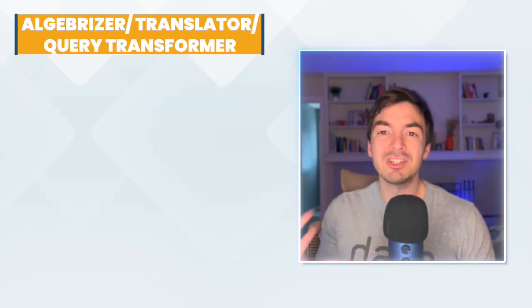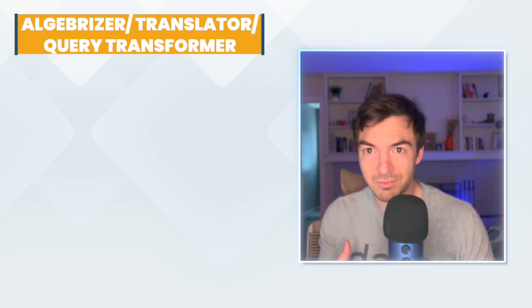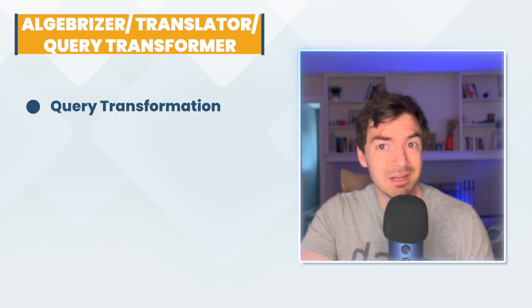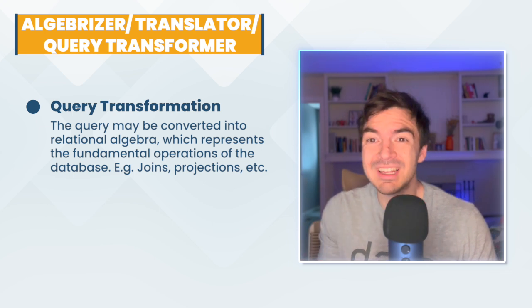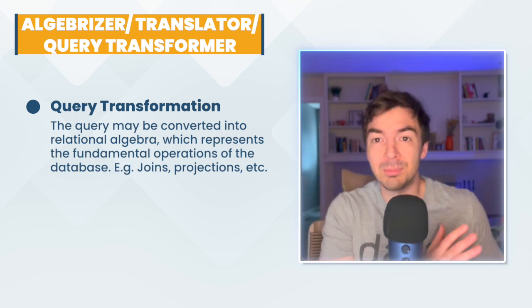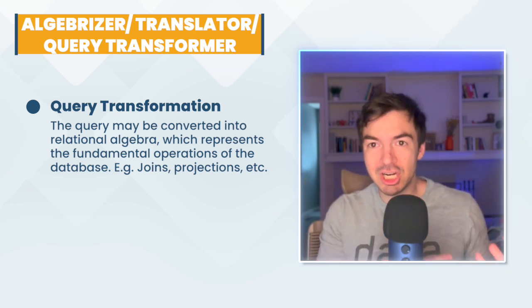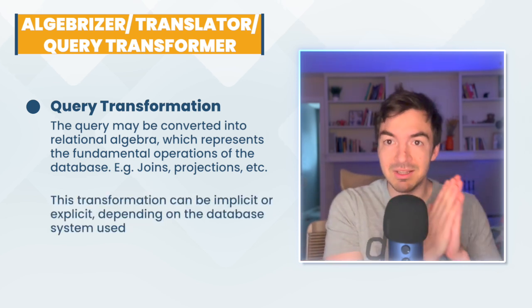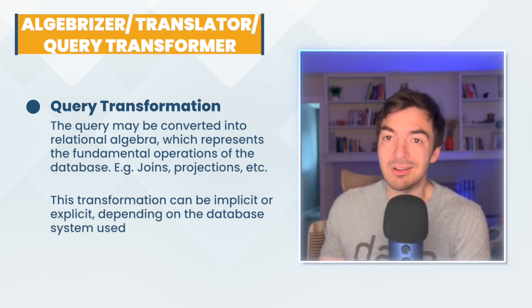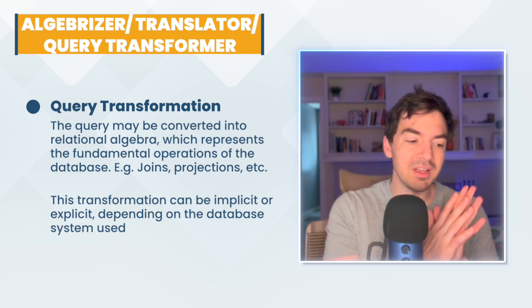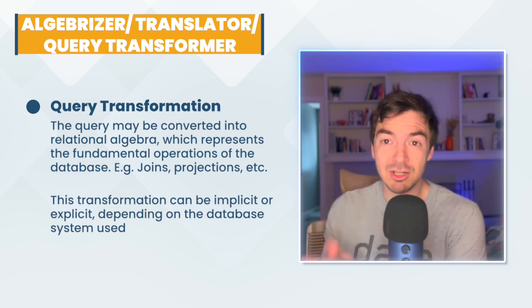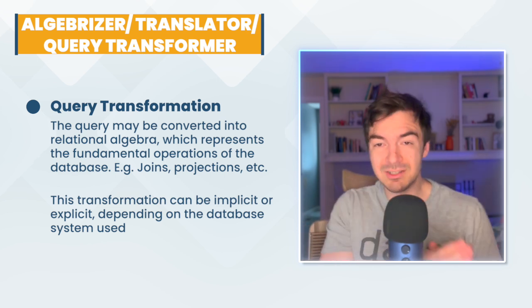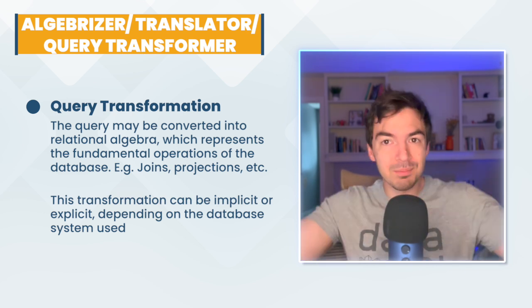Now that we've parsed your query, we go to the next step — different databases use different terms, such as 'algebraizer,' 'translator,' or 'query transformer.' Basically, you take this query and, depending on the database system, it may be converted into what is known as relational algebra, which is essentially the underpinning of a database system. It refers to things like joins, projections, and other key operations, and translates the query into that. Sometimes this is implicit, sometimes explicit. Other times it just looks at your query and tries to find the most optimal route, or it may build multiple forms of relational algebra to figure out different logical query patterns — essentially the plan for how the query can be executed.